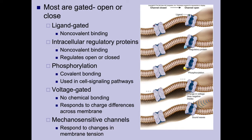Intracellular regulatory protein channels also use non-covalent binding. Here, a protein found inside the cell senses that something outside is needed and binds to the channel to open it. For example, through an RTK pathway, the MAP kinase cascade may activate a transcription factor that turns on a gene for a regulatory protein. That protein is produced, exits the nucleus as mRNA becomes protein, finds a channel, binds it, and opens it — that's the cellular response.